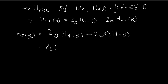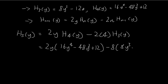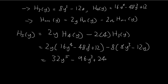Now we can substitute the results back in. We have 16y to the power of 4 minus 48y squared plus 12, and then minus 8 times h3 of y, which equals 8y to the power of 3 minus 12y. Expanding the bracket, we have 32y to the power of 5 minus 96y to the power of 3 plus 24y, and then minus 64y to the power of 3 plus 96y.